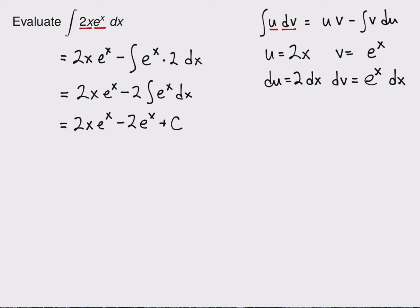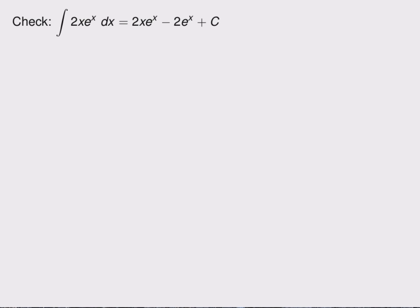So let's check this. So here on the next slide, I've got what we started with. I can always check by taking a derivative. So to make sure I have an antiderivative, I'm going to take the derivative with respect to x of 2x e to the x minus 2 e to the x plus a constant. Well, that first derivative is a product rule.